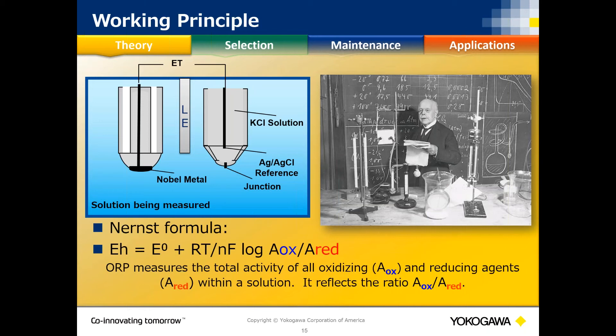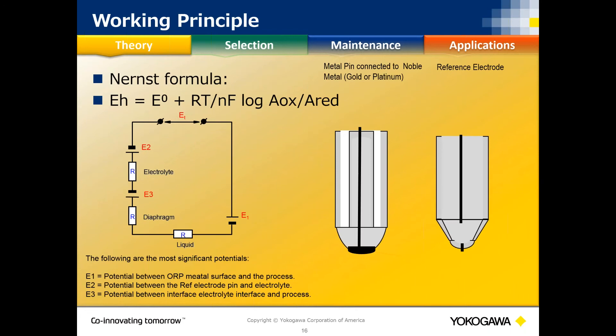The silver-silver chloride pin is immersed in a KCl solution with a junction open to the process — that combination provides a zero millivolt reference value. This allows us to read just the millivolt value generated on that noble metal and get the actual ORP reading.